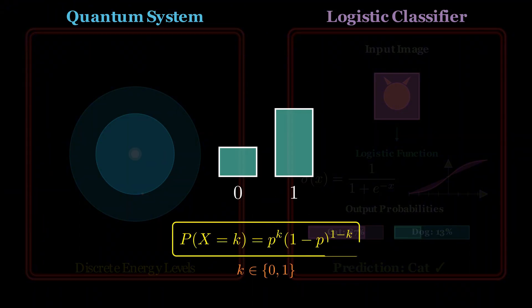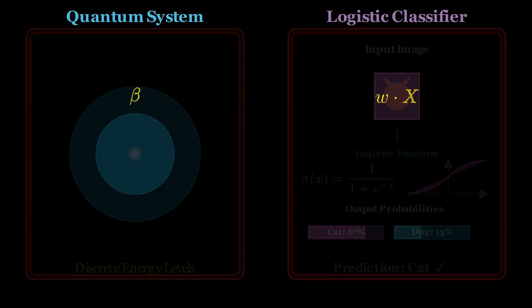both systems are governed by the same underlying probability laws. Both are probabilistic. Both are controlled by energy-like quantities. And both decide between two outcomes. One lower state and higher states. The other, cat and dog. But how exactly does this connection emerge? Let's dig deeper.